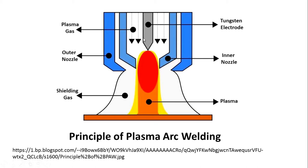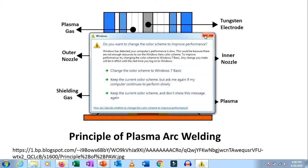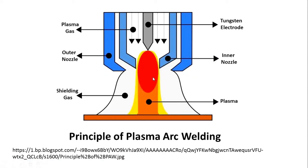Here we have a tungsten electrode. In GTAW the electrode always comes out from the nozzle, but here it sits somewhat inside at a certain distance. When you are making the drawing you should show two nozzles and the electrode getting inside the nozzle. We have two shielding gases — one is the plasma gas and another is the shielding gas — and the arc will come and pass through to the workpiece.